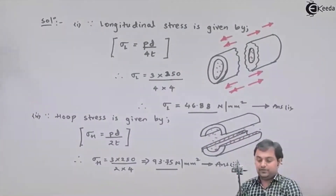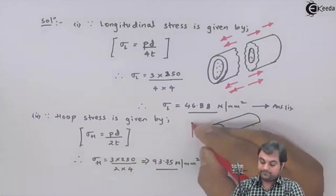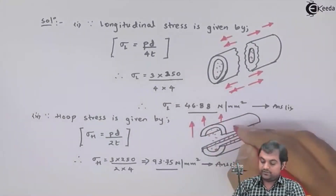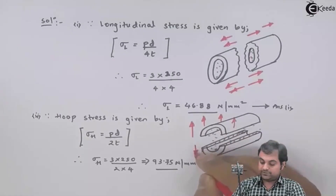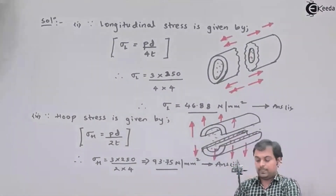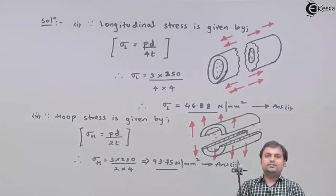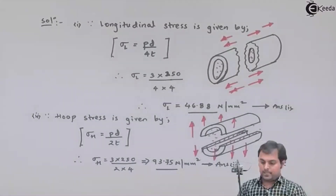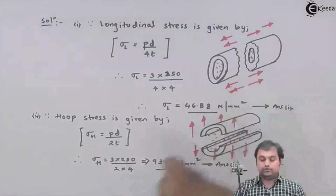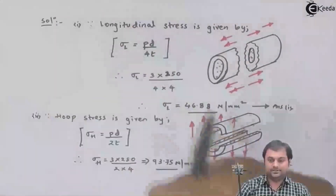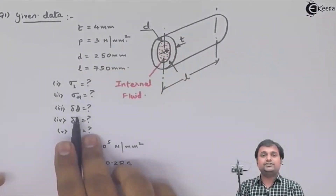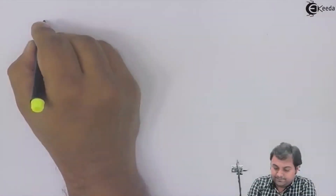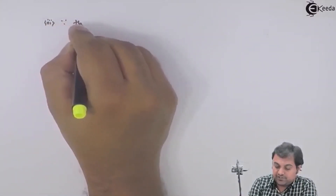Because of the internal pressure developed, there are chances of the cylinder bursting perpendicular to the circumference — that is, instead of breaking lengthwise, it would break along its diameter. So hoop stress and longitudinal stress answers are complete. Next, we need to find the change in diameter. For change in diameter we will calculate hoop strain.